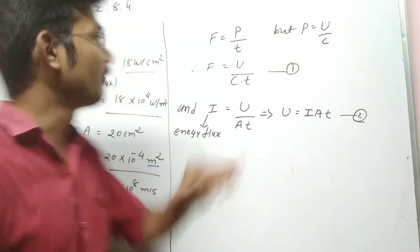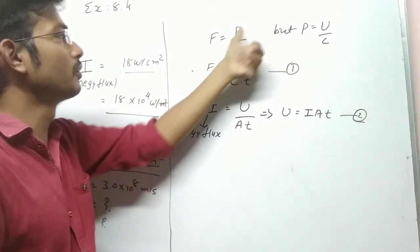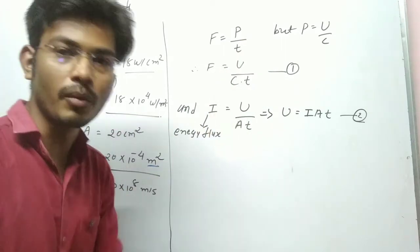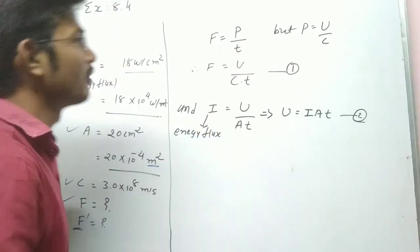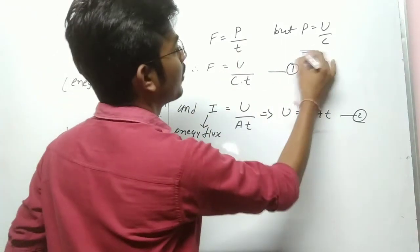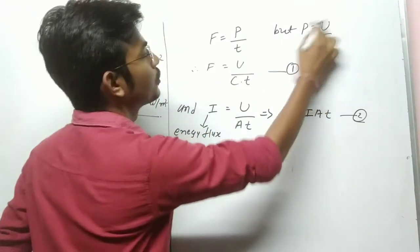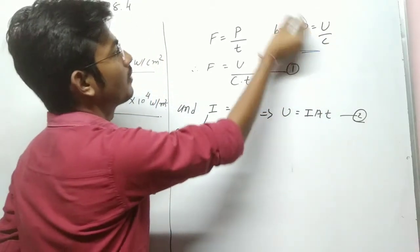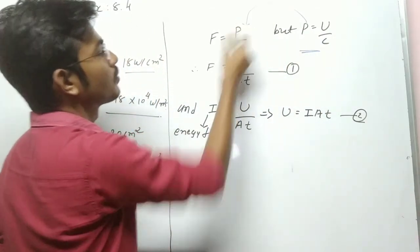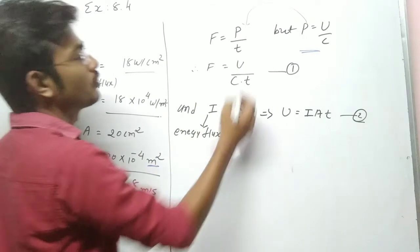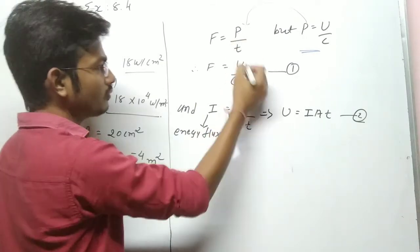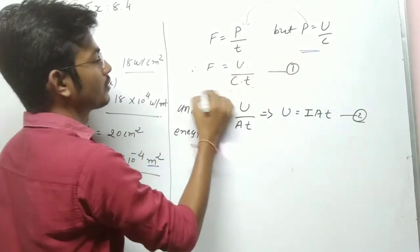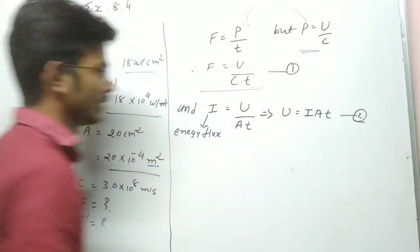We have the equation: F = P/T, where P means momentum. And we know that momentum P = U/C. Substituting this into the force equation gives us F = U / (C × T). This becomes our Equation 1.